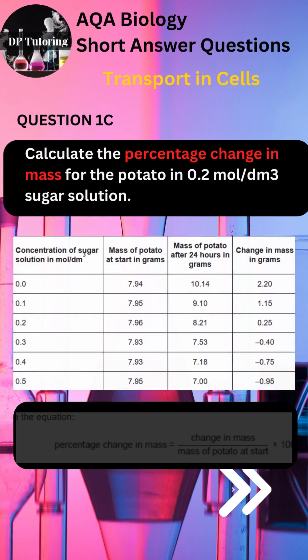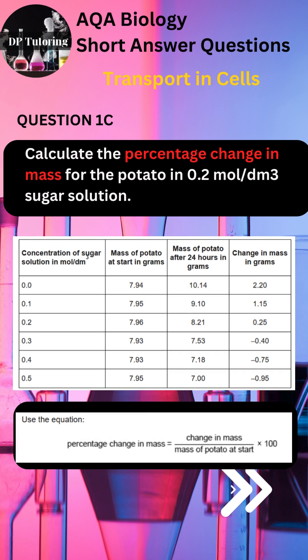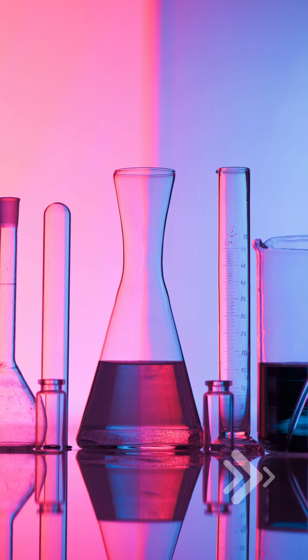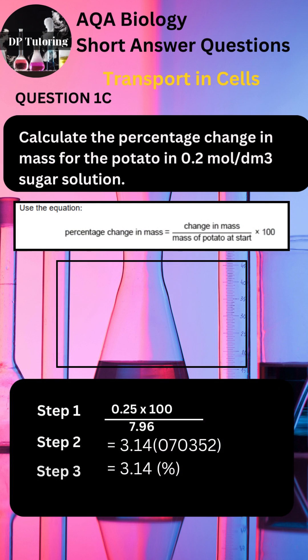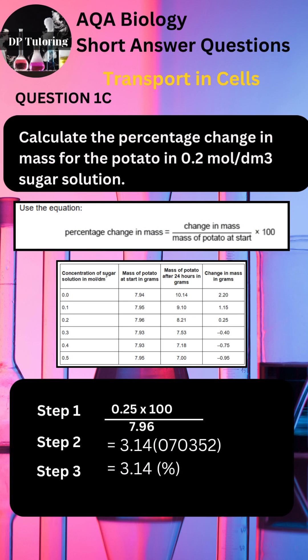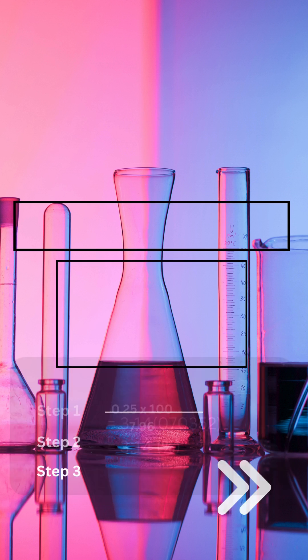Part C asks you to calculate the percentage change in mass for the potato in 0.2 moles per decimetre cubed sugar solution. AQA provides the equation you need to use. Step 1: plug the information into the equation for the mass at 0.2 mol/dm³, multiply by 100, then divide by 7.96. Step 2: write out the full answer. Step 3: round to two decimal places, since all answers are given to two decimal places. The final answer is 3.14%.